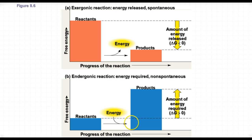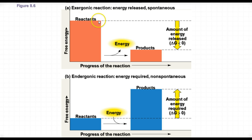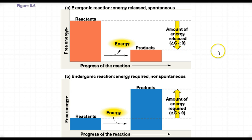Here we have graphs that show the difference in free energy in both exergonic and endergonic reactions. In exergonic reactions, we start off with the reactants at a high energy level. Energy is given off, and the products have a lower energy. Delta G is less than zero, which means it's a negative value, so that could be a spontaneous reaction.